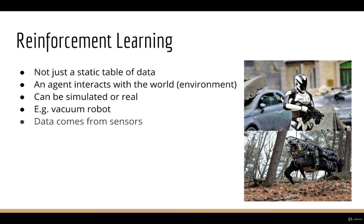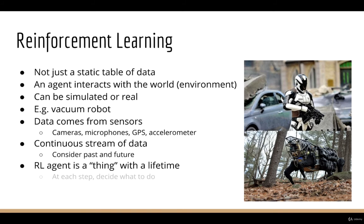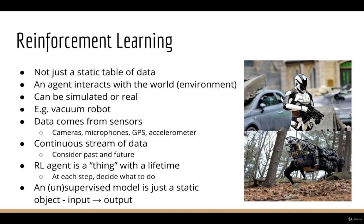Your agent is going to have sensors — cameras, microphones, an accelerometer, a GPS, and so forth. It has a continuous stream of data coming in, and it's constantly reading this data to make a decision about what to do in that moment. It has to take into account both past and future; it doesn't just statically classify or label things. In other words, a reinforcement learning agent is a thing that has a lifetime, and in each step of its lifetime it has to make a decision about what to do. A static supervised or unsupervised model is not like that — it has no concept of time. You give it an input, and it produces a corresponding output.